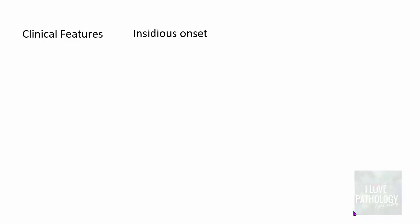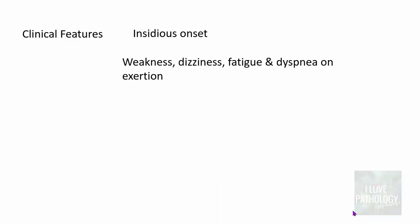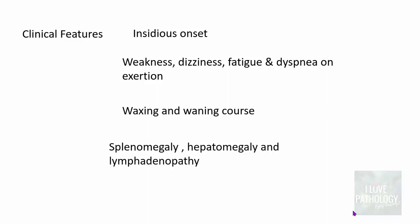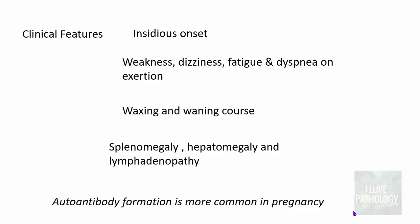The clinical features of warm antibody type immune hemolytic anemia are most often insidious in onset. Patients present with weakness, dizziness, fatigue, and dyspnea on exertion. The course is often waxing and waning. Findings include splenomegaly, hepatomegaly, and lymphadenopathy. It is important to note that autoantibody formation is more common in pregnancy — pregnant women are more prone to develop warm antibody type immune hemolytic anemias.